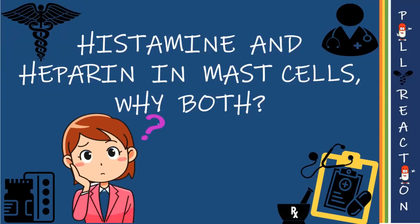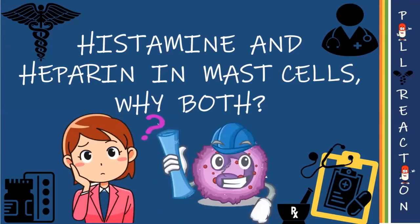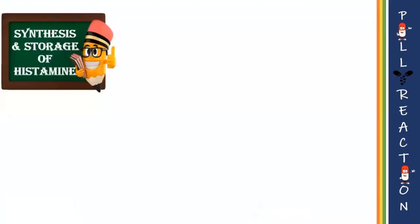almost ubiquitously present in animal tissue and in certain plants. Histamine is present in various biological fluids, platelets, leukocytes, basophils, and mast cells. Let us have a quick understanding of the synthesis and storage of histamine within the granules of mast cells.